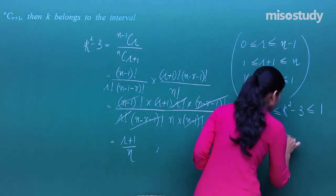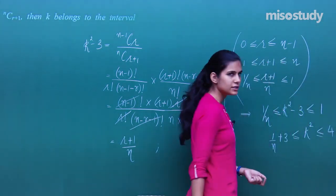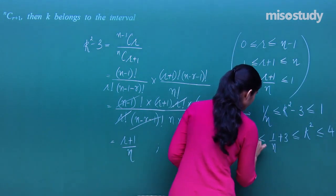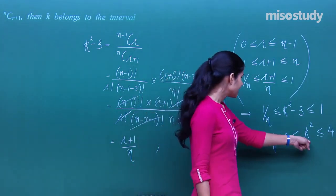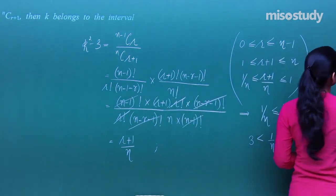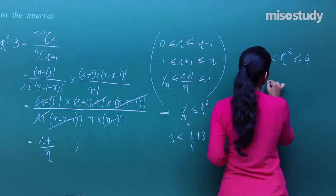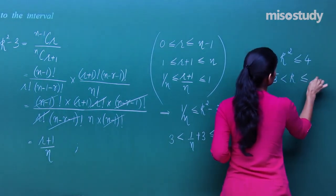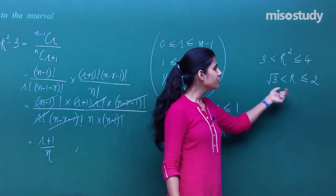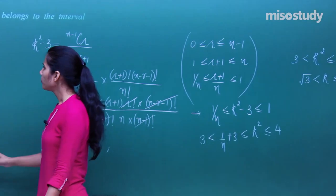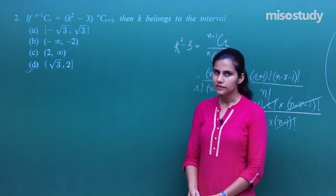So we get 1/n + 3 ≤ k² ≤ 4, and since n is positive, this term is strictly greater than 3. Therefore k² is strictly greater than 3 and less than or equal to 4, meaning k lies between √3 and 2. So k belongs to the open-√3, closed-2 interval.